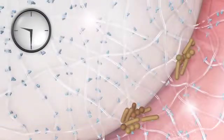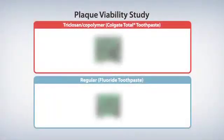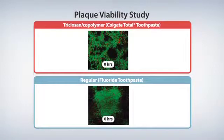In fact, when comparing bacterial growth using confocal microscopy, we see that bacteria, shown in green, are viable before application in both the Colgate Total and regular fluoride toothpaste samples.